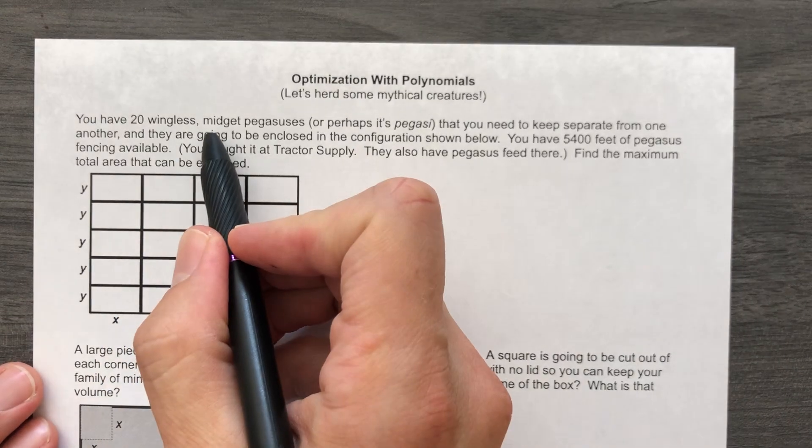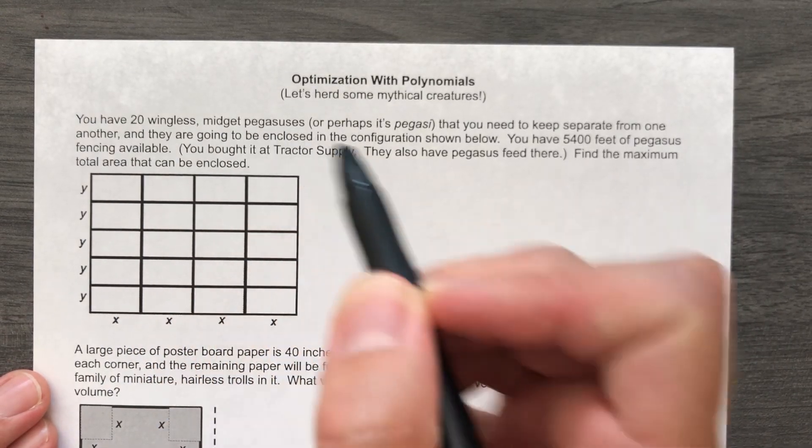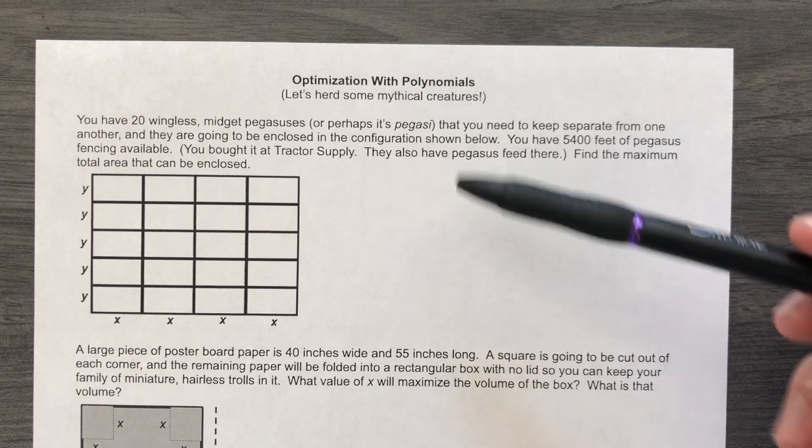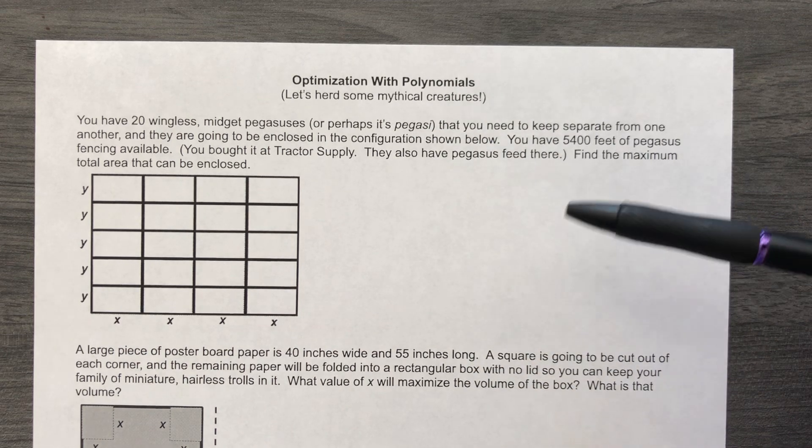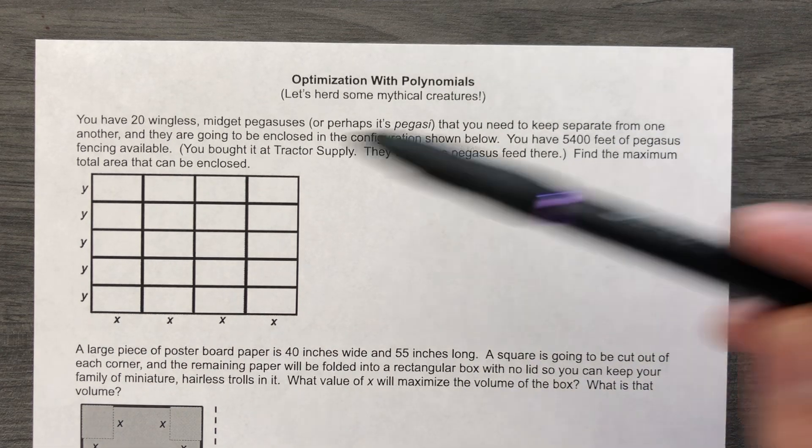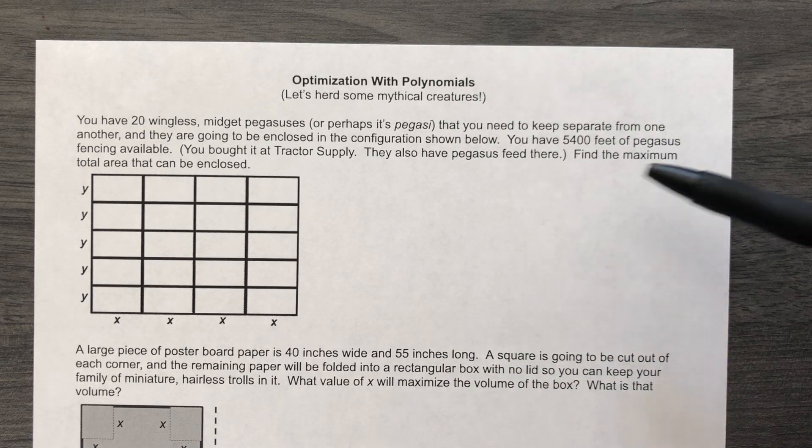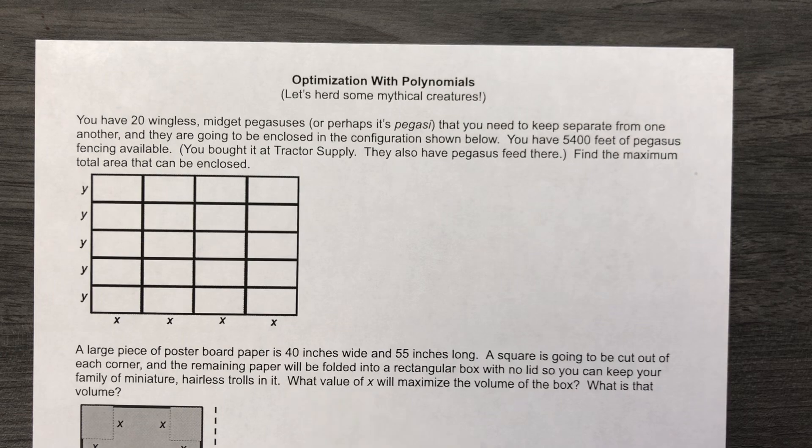You have 20 wingless midget Pegasuses, maybe it's Pegasi, that you need to keep separate from one another and they're going to be enclosed in the configuration shown below. You have 5,400 feet of Pegasus fencing, brought at Tractor Supply, they have Pegasus feed there. We're gonna find the maximum total area that can be enclosed.